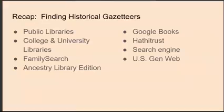Finding gazetteers is a little trickier than finding online maps because there are fewer online lists of collections. Try public libraries or college and university libraries near the place you're researching. Try FamilySearch — either do a catalog search with 'gazetteer' as the keyword, or search for books with 'gazetteer' as a keyword, and click the radio button to search for gazetteers available online. Ancestry Library Edition has historical gazetteers. You can also search Google Books or HathiTrust, use your favorite search engine, or try U.S. GenWeb.